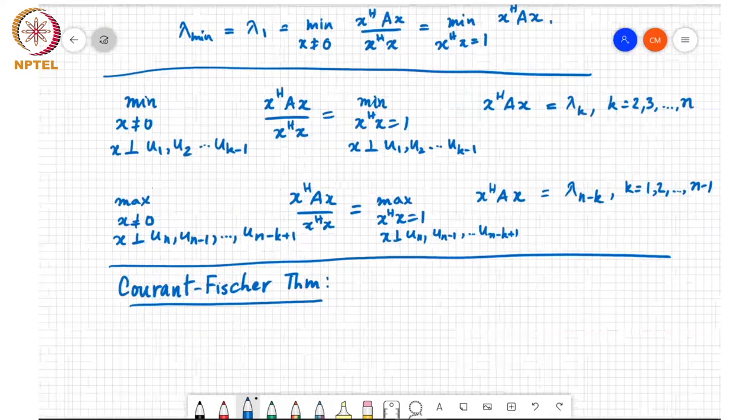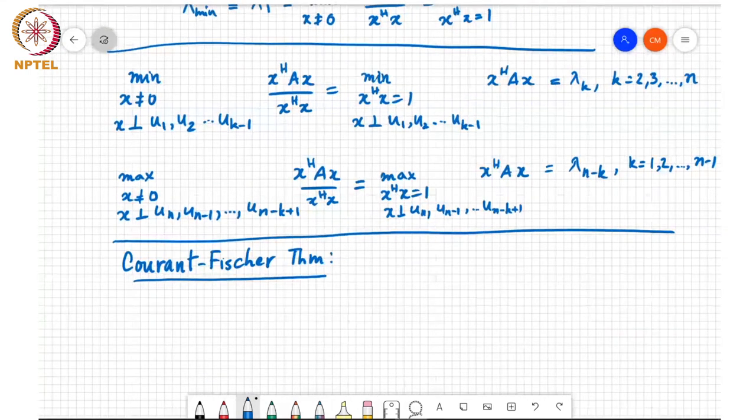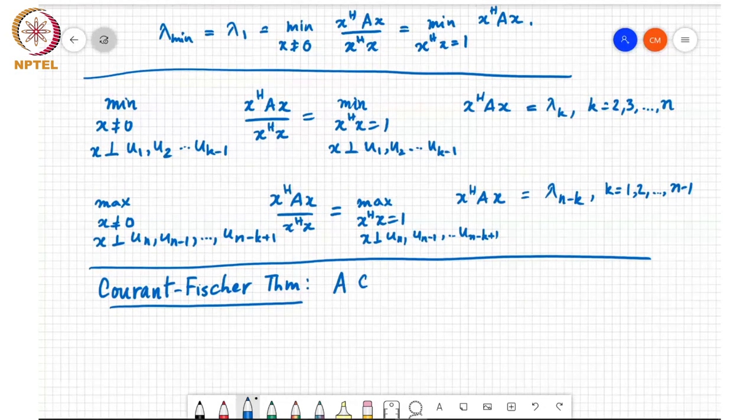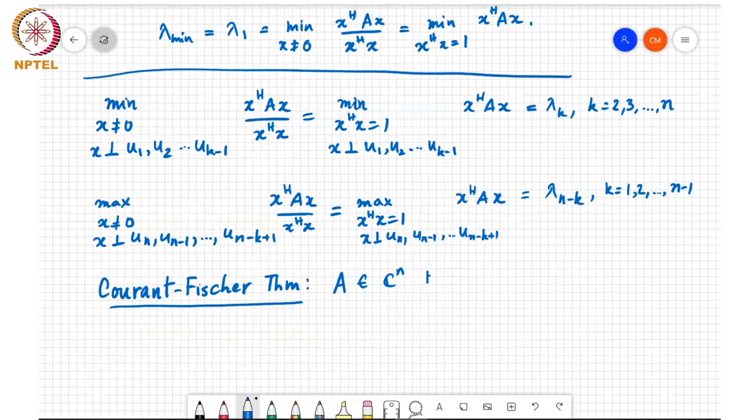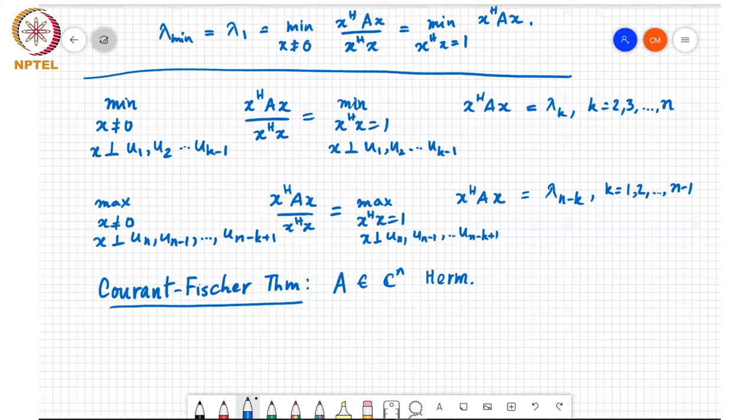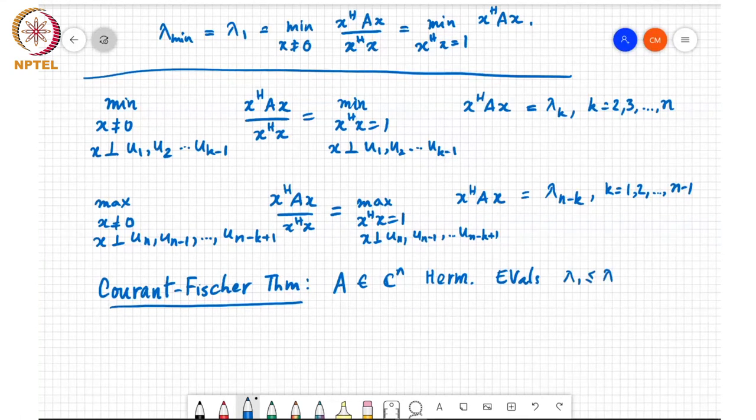And what this says, this is a min-max theorem. And what this theorem says is that, again, the starting point or the setting is that A is a matrix of size n cross n and is a Hermitian symmetric matrix with eigenvalues lambda 1 less than or equal to lambda 2 less than or equal to up to lambda n, and let k be an integer 1 less than or equal to k less than or equal to n. Then,